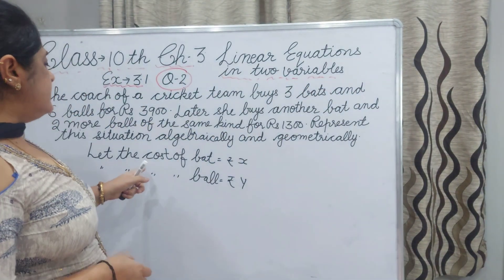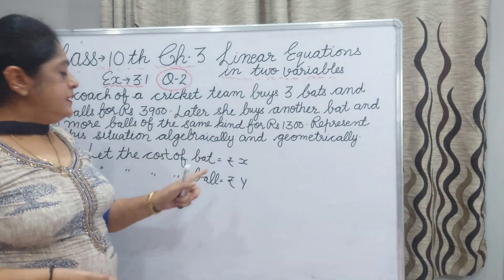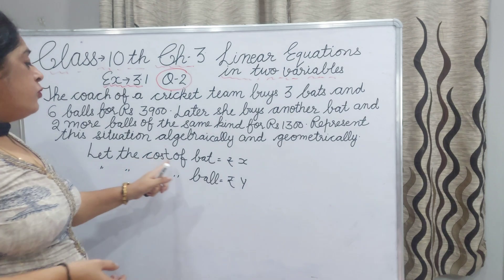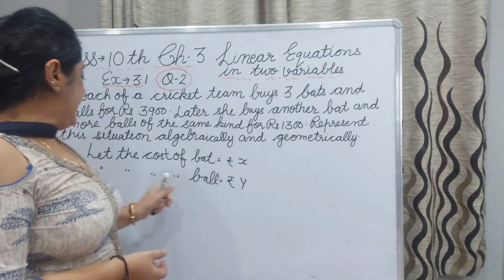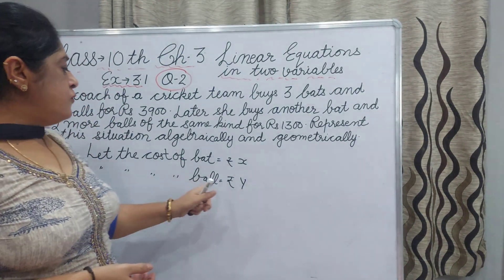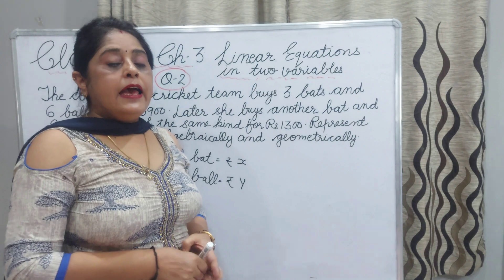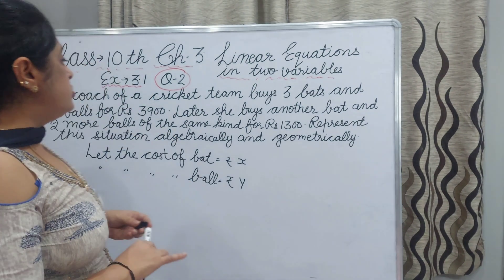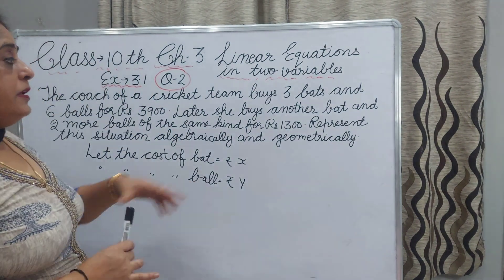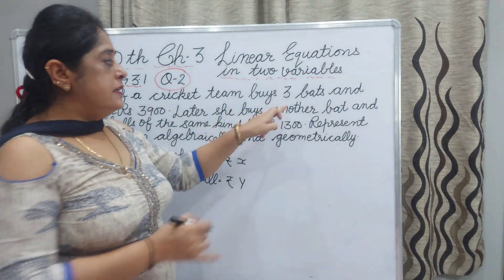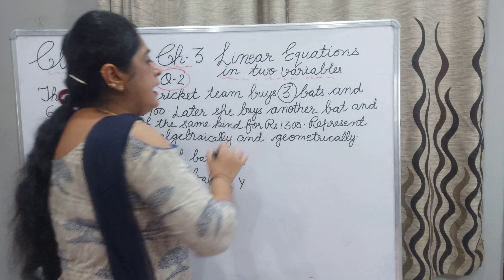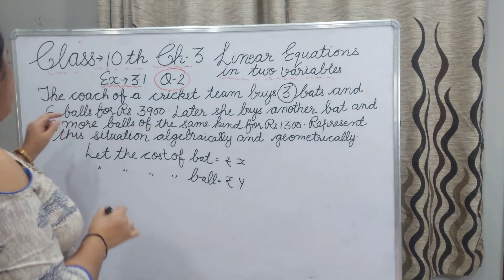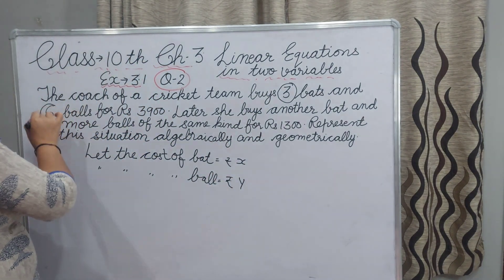First of all, let the cost of a bat be Rs. X and let the cost of a ball be Rs. Y. According to the question, how many bats were there? 3. And how many balls were there? 6.